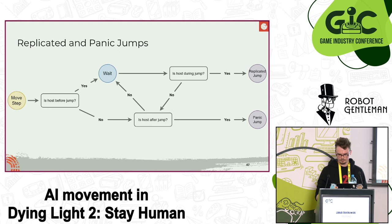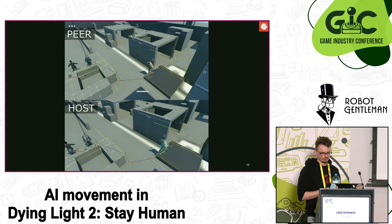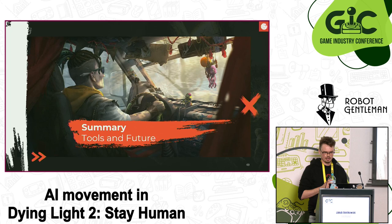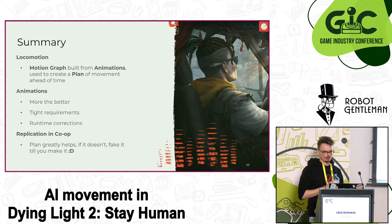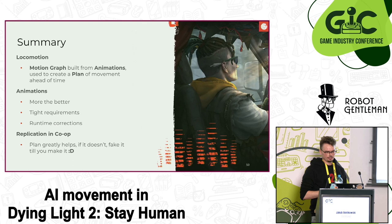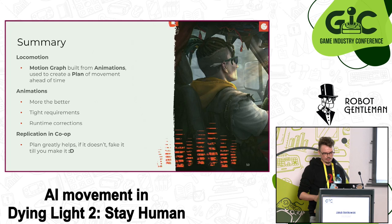Here you can see an example of replication in the wild. There are small differences in plan execution between the peer and the host, but nothing the planner can't handle. To summarize: locomotion is animation driven, based on a motion graph built automatically from supplied animations. It plans motion along a path ahead of time — more animations means better quality and more cases covered. Each animation type has tightly defined requirements. Animations are corrected at runtime to fit geometry better. And for co-op replication, having a plan and motion graph really helps — and if it doesn't, we fake it till we make it.